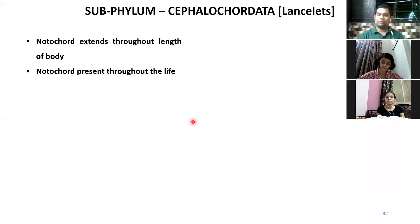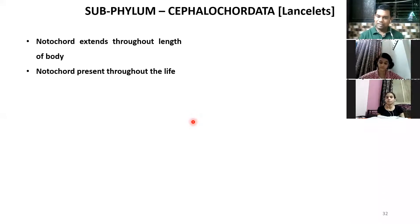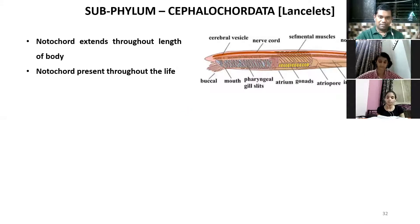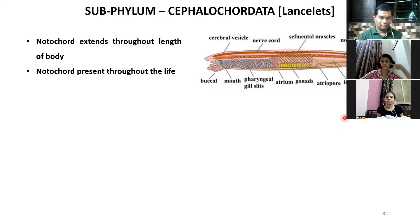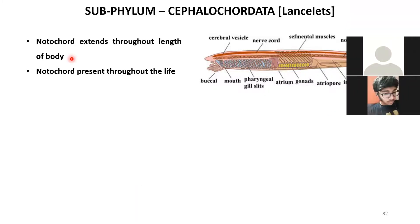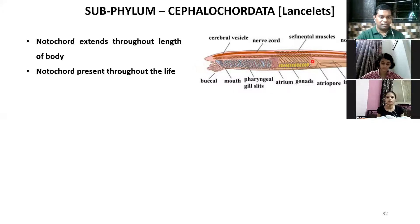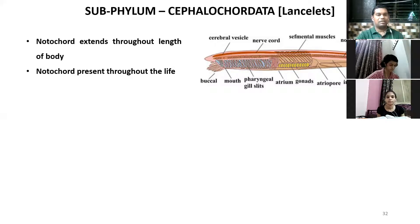Since the notochord is present throughout the complete life, from Cephalochordata the true chordates begin. These are elongated, fish-like animals. They are also marine and aquatic. They have a buccal cavity, nerve cord, pharyngeal gill slits, and a notochord on the dorsal side of the body. The nerve cord is on the ventral side — that's a chordate feature.